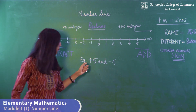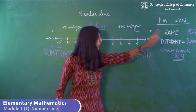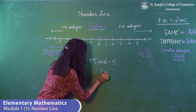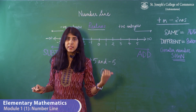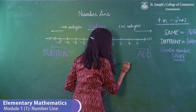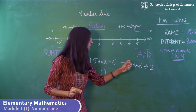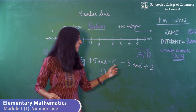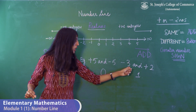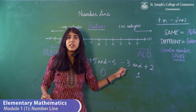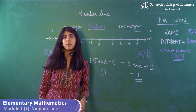For example, plus 5 and minus 5. Since they have opposite signs, you need to subtract. When I subtract 5 and 5, I get 0. In this case, 0 cannot have a positive or negative sign preceding it. If it was minus 3 and plus 2, they have opposite signs so I subtract. When I subtract 3 and 2, I get 1. The greater number is 3, and the sign preceding 3 is minus, therefore the answer also has minus.